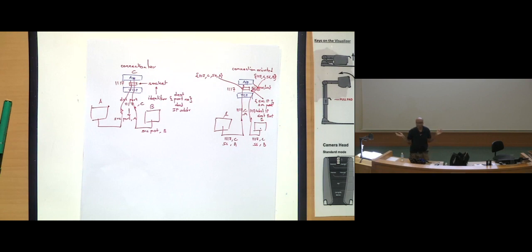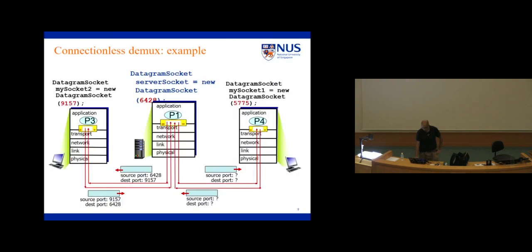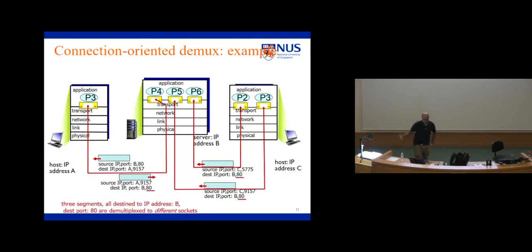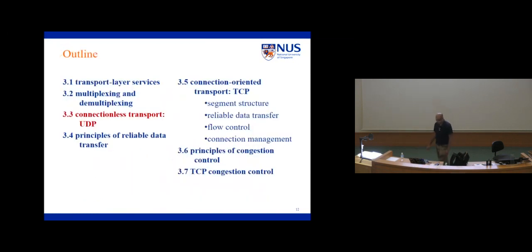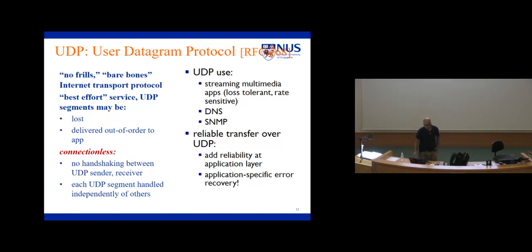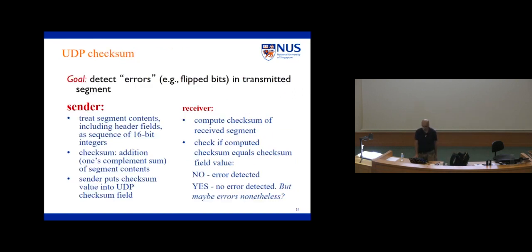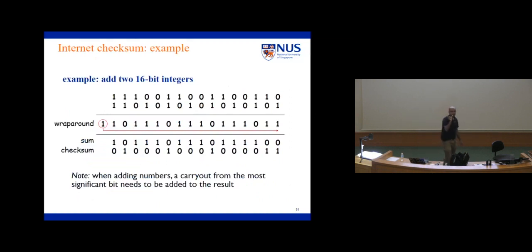We talked about ports, connection-oriented, and connectionless. Then we got onto UDP. UDP doesn't provide much — it's best effort. It tries to do things for you but there are no guarantees. If you lose packets, it will not recover them. If it's out of order, it will not bother. But it does do an error check through the calculation of a checksum. We take the packet 16 bits at a time, add any overflow, bring it back, and at the end do a one's complement.